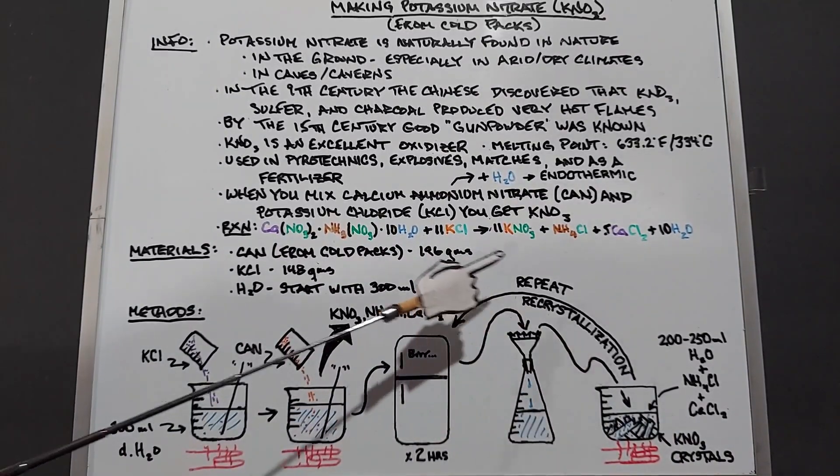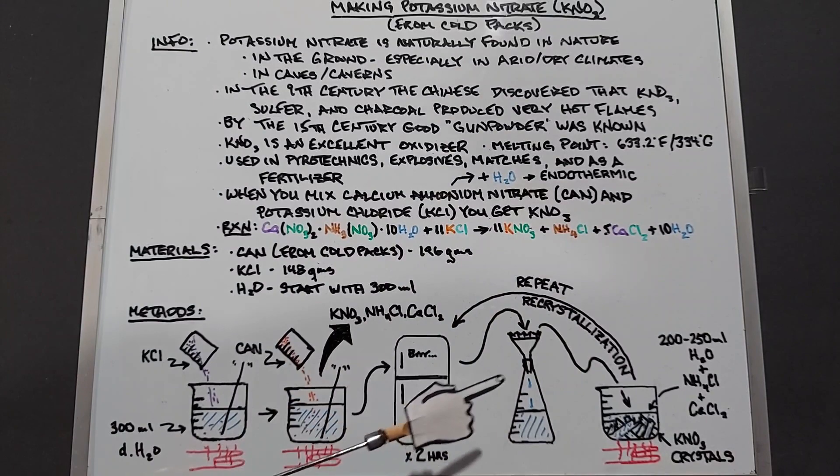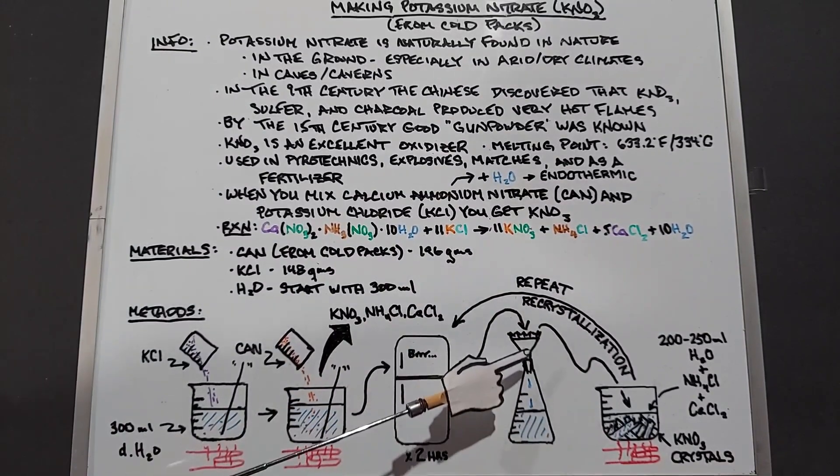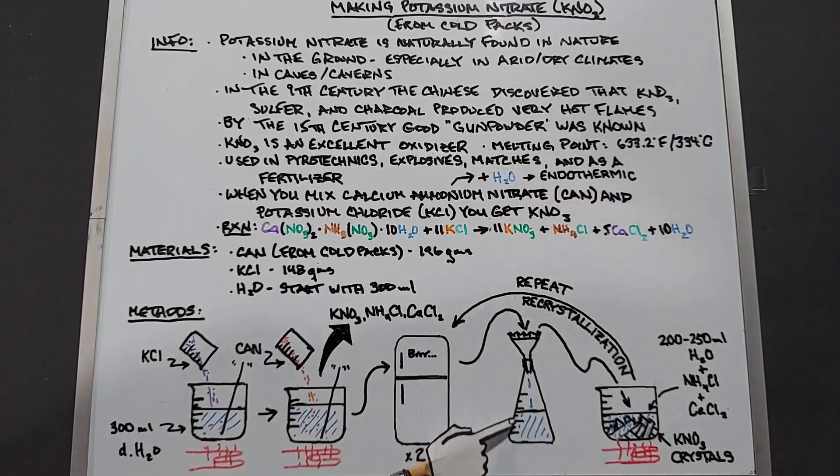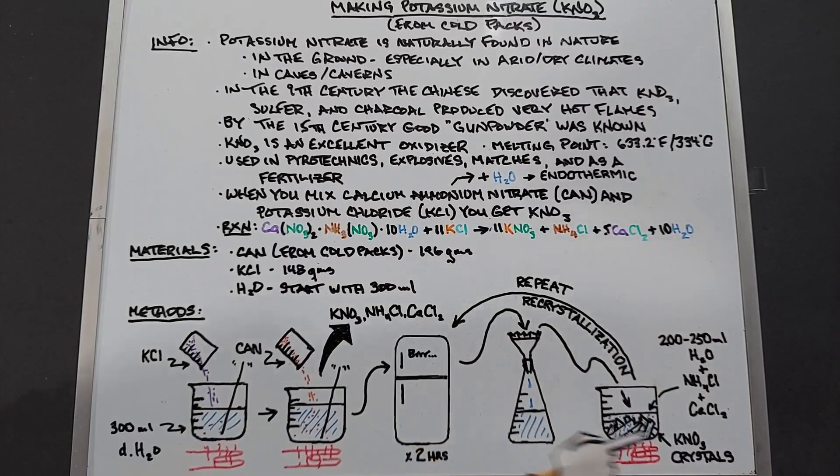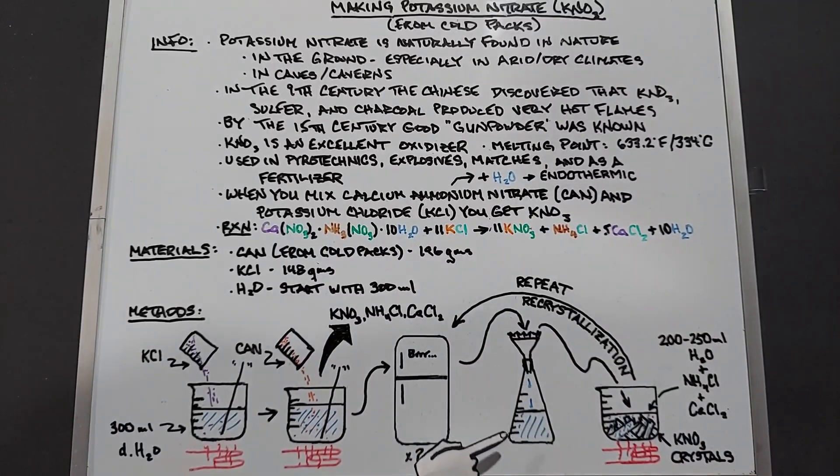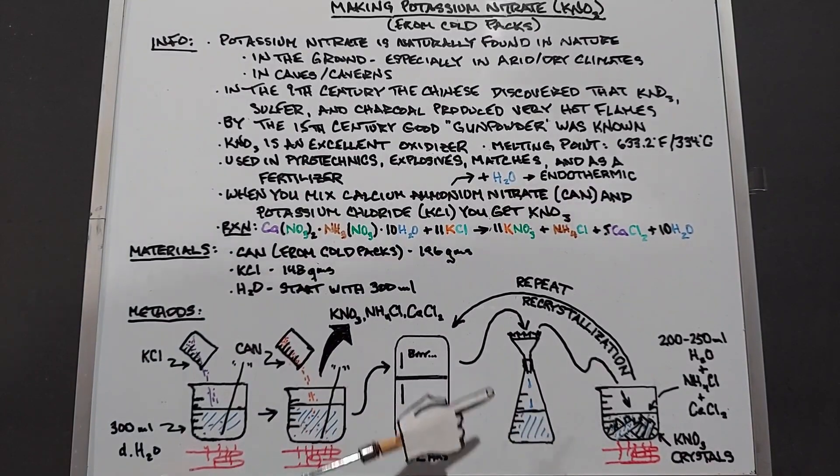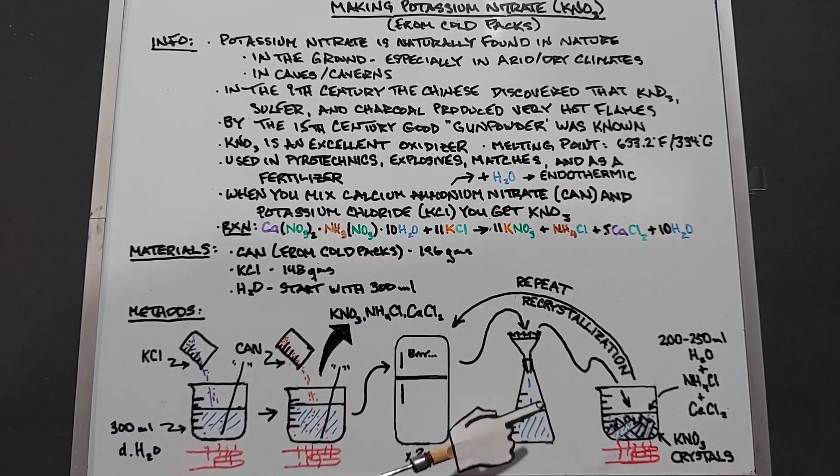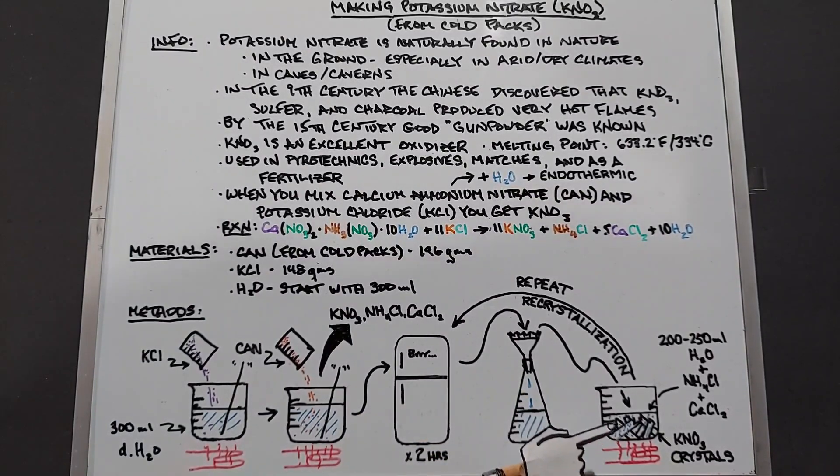Every time we do this we purify the potassium nitrate. And when we filter it we let through most of the calcium chloride and ammonia chloride but also a small amount of potassium nitrate. So you get your largest yield if you don't recrystallize, but your potassium nitrate won't be as pure. When you recrystallize once, twice, which is what I'm planning on doing, you'll end up with really pure potassium nitrate but not as much potassium nitrate.